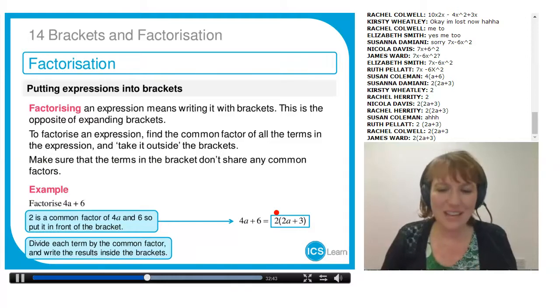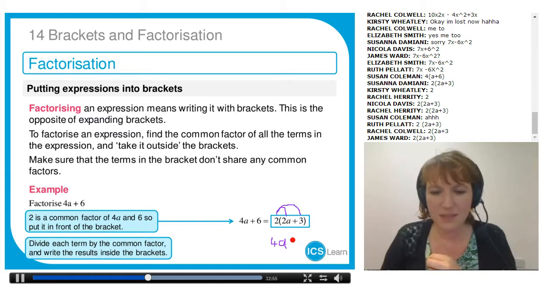Let's multiply out this bracket and check that it takes us back to the original answer. It's always a good idea to. 2 times 2a is 4a. That's right. And then 2 times plus 3 is plus 6, which is the same as the thing I started with. Yes, that is correct. It will come with practice.